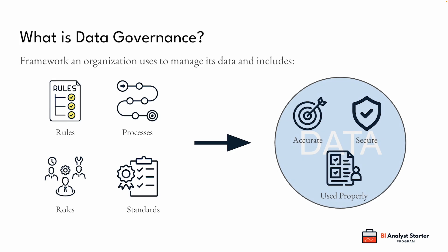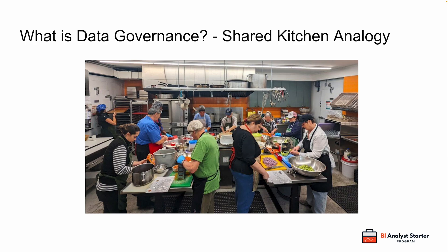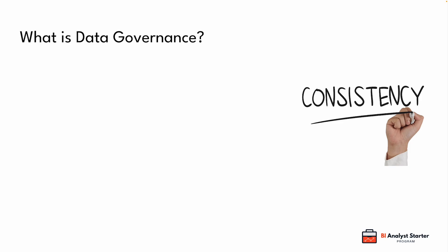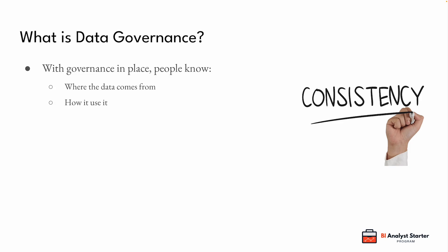A common analogy for data governance is a shared kitchen. Everyone's allowed to use it, but there are expectations. You label your food, clean up after yourself, and don't touch what doesn't belong to you. Without rules, things get messy fast — and it's exactly the same with data. With governance in place, people know where the data comes from, how to use it, and who's responsible for it.